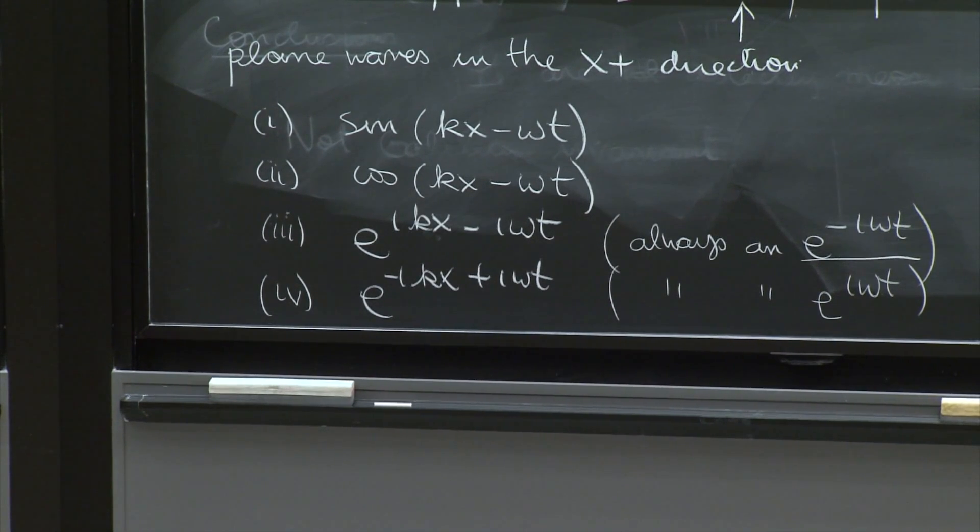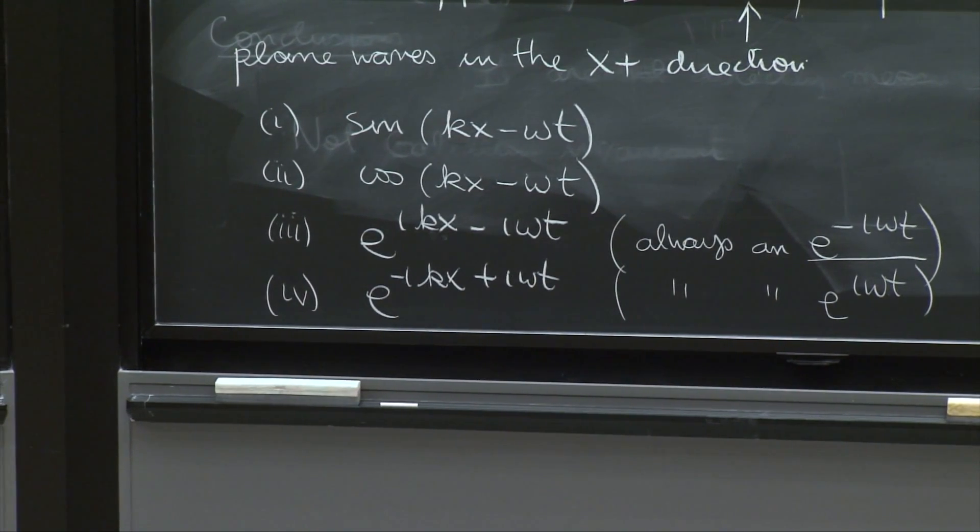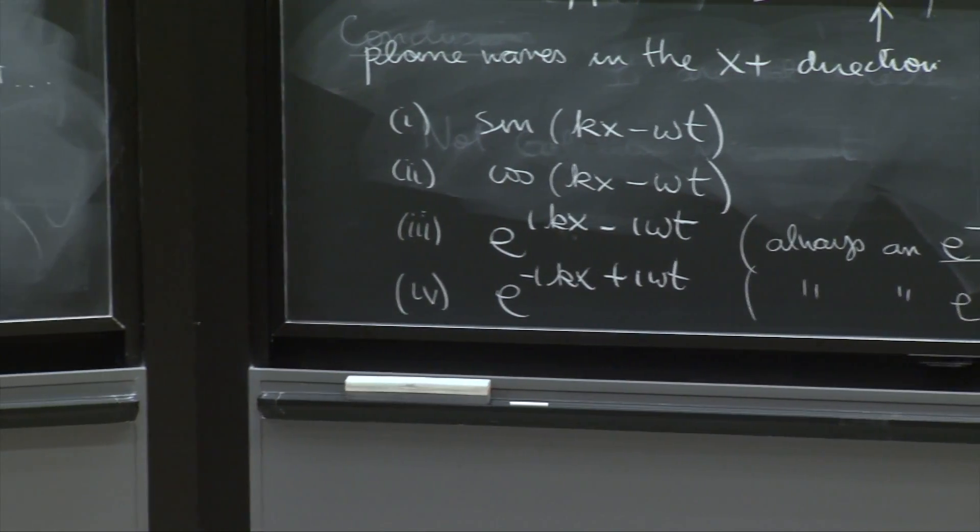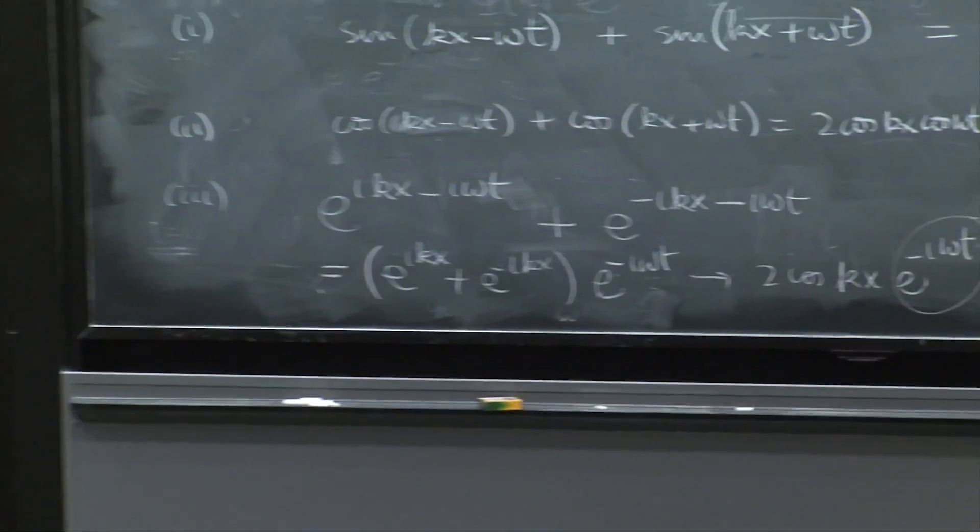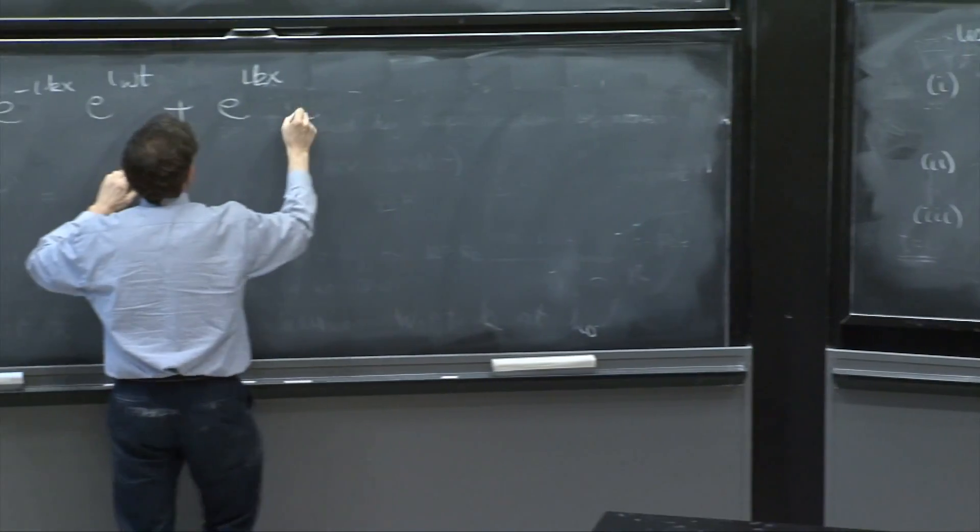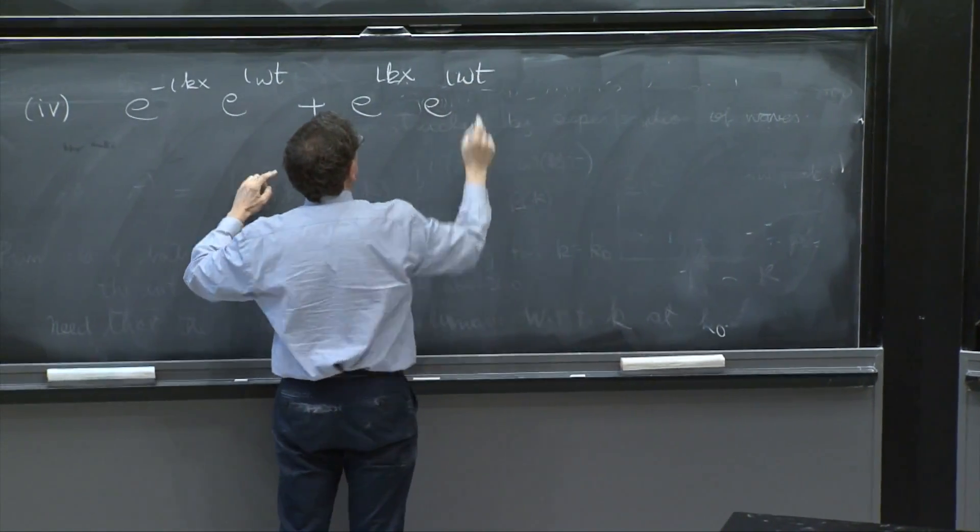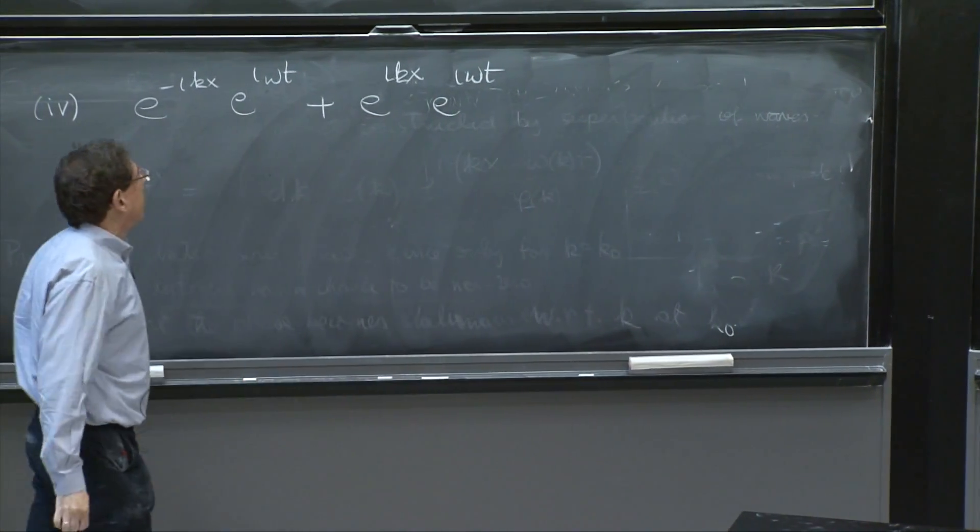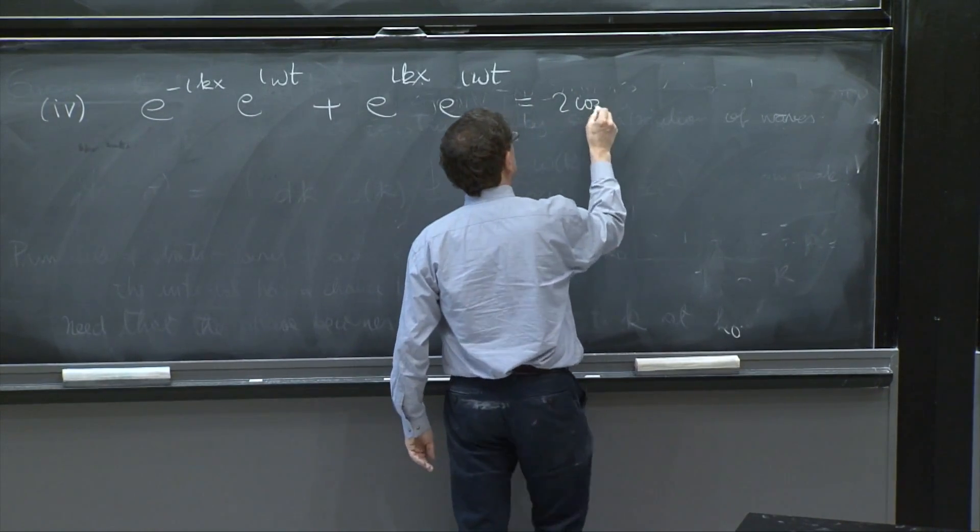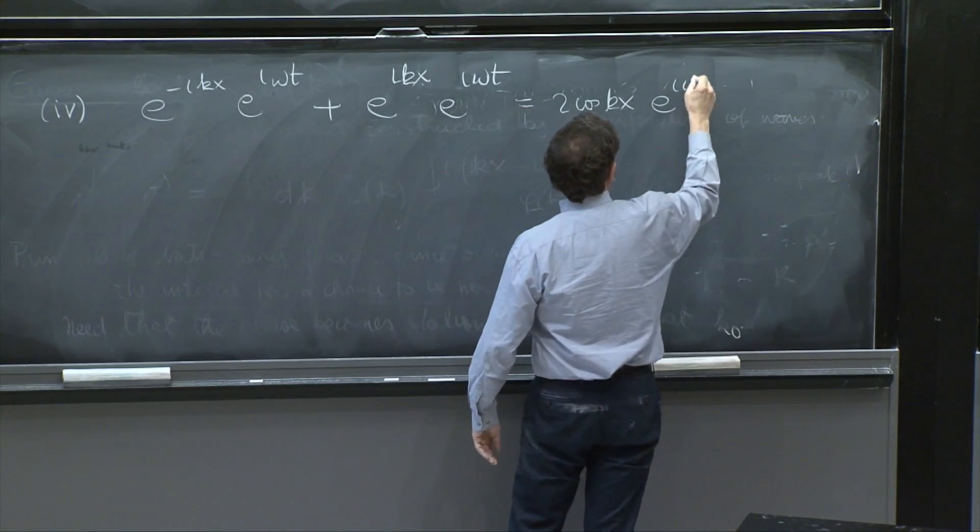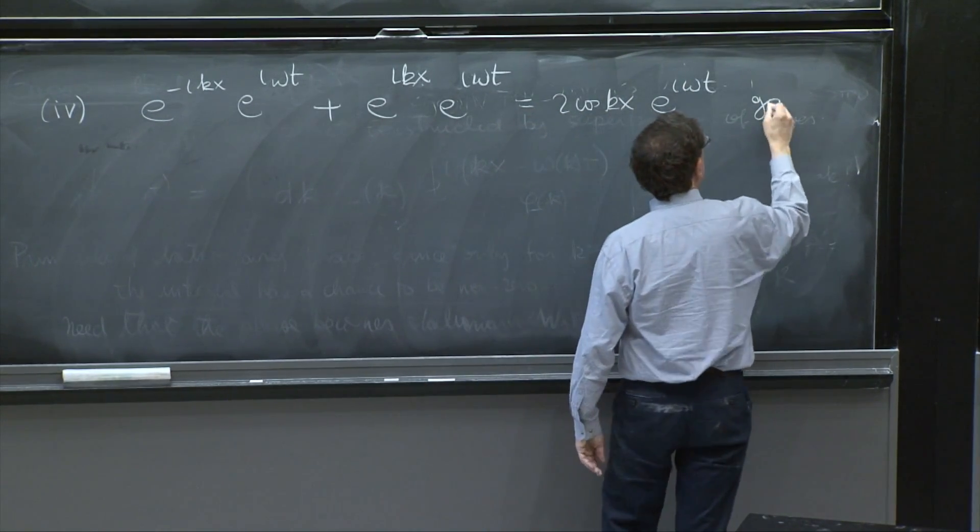So case 4, you would do an e to the minus ikx, e to the i omega t, plus an e to the ikx, e to the i omega t. Always the same exponential. And this is simply 2 cosine of kx, e to the i omega t. And it's also good.